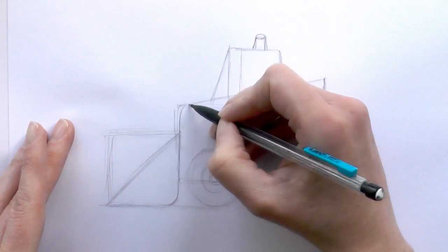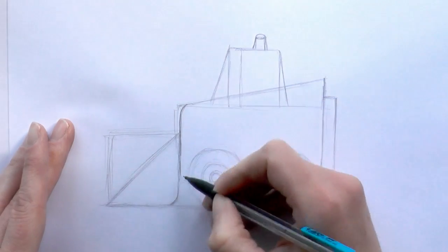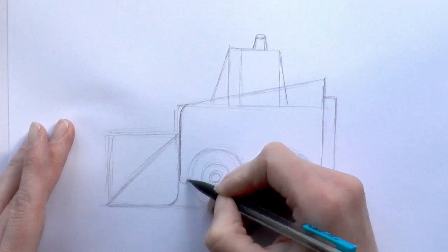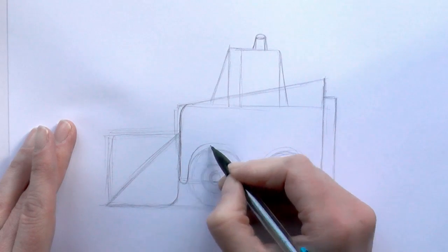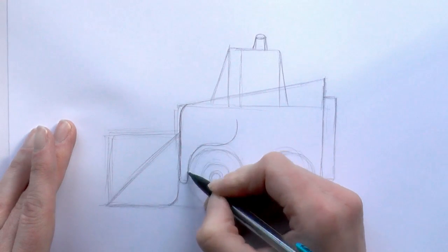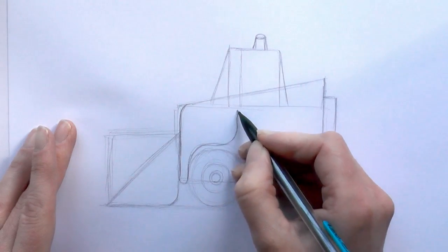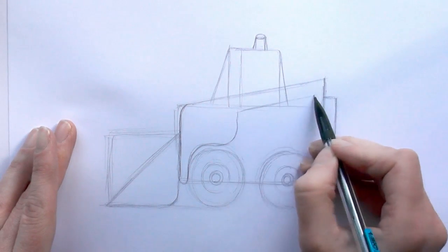And then we're just going to round off these corners here, just where that digger is, and then bring the curve line up and around that wheel. And we're just going to run along a line parallel to that one.